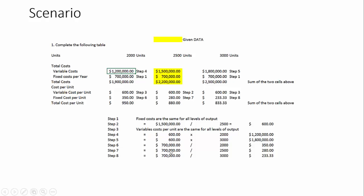In step 6, we take the $700,000 of fixed costs divided by 2,000 units to get $350 per unit. We divide $700,000 by 2,500 to get $280, and $700,000 divided by 3,000 gives us $233.33. That's how we take the known values, fill out the unknowns, and complete the table with all variable and fixed costs and the per-unit figures.